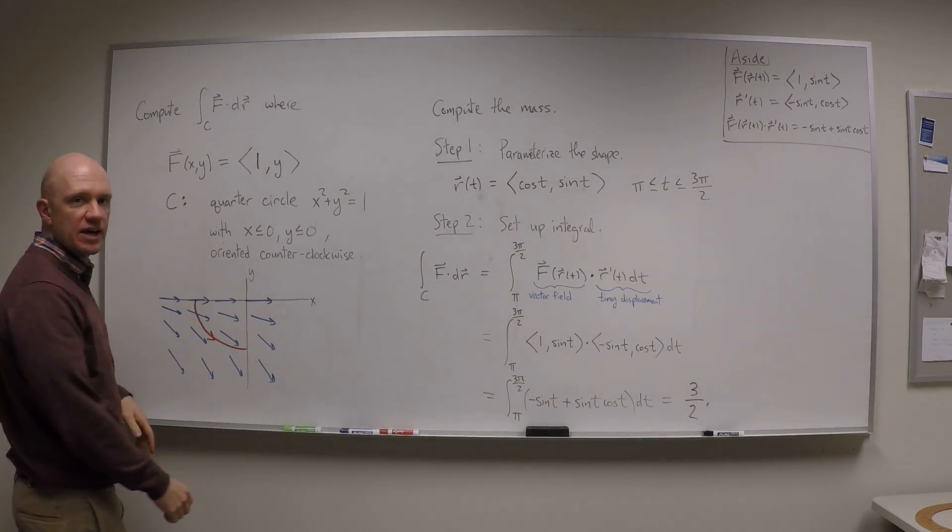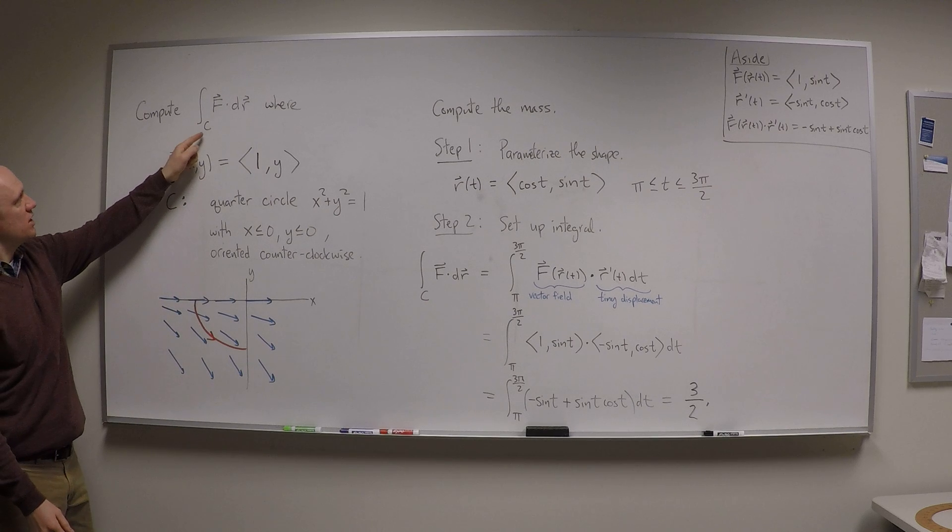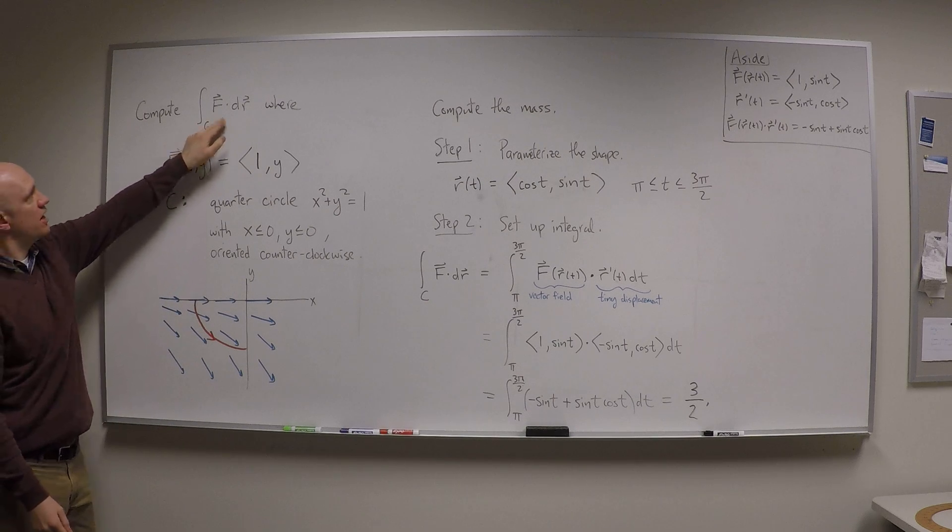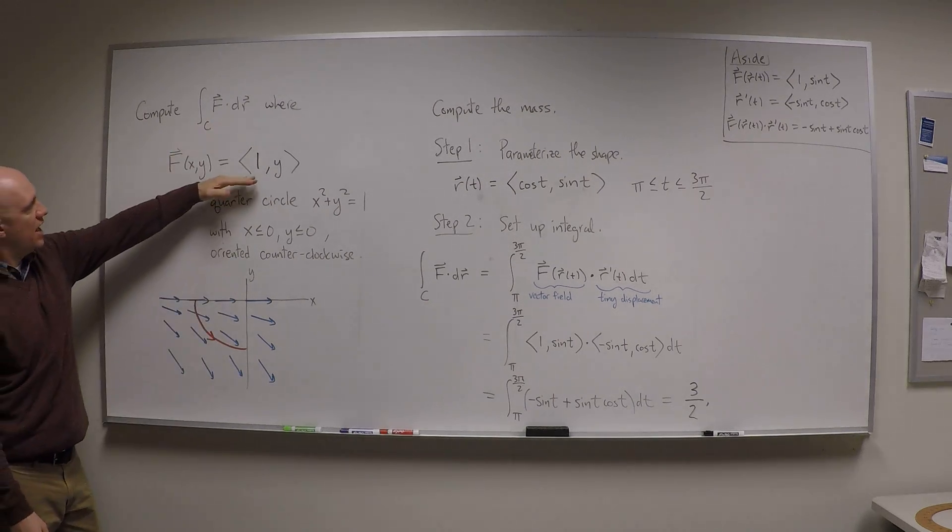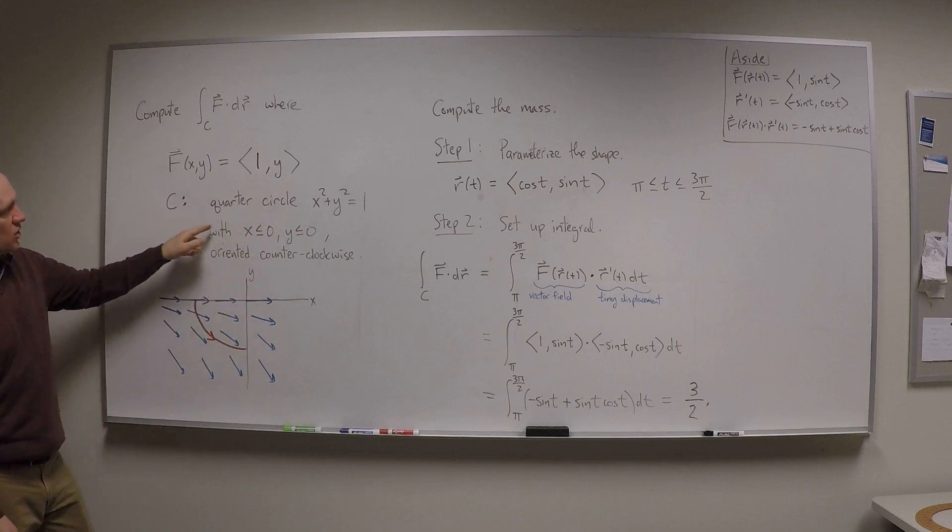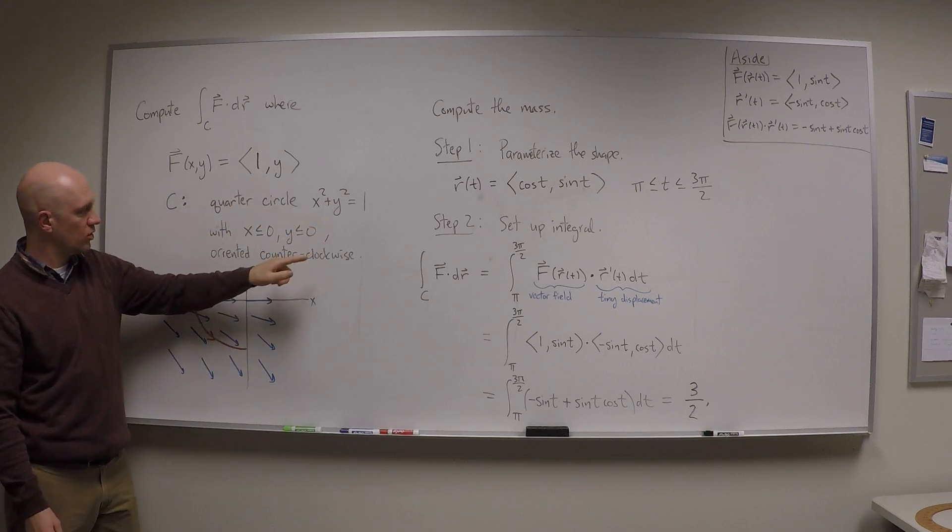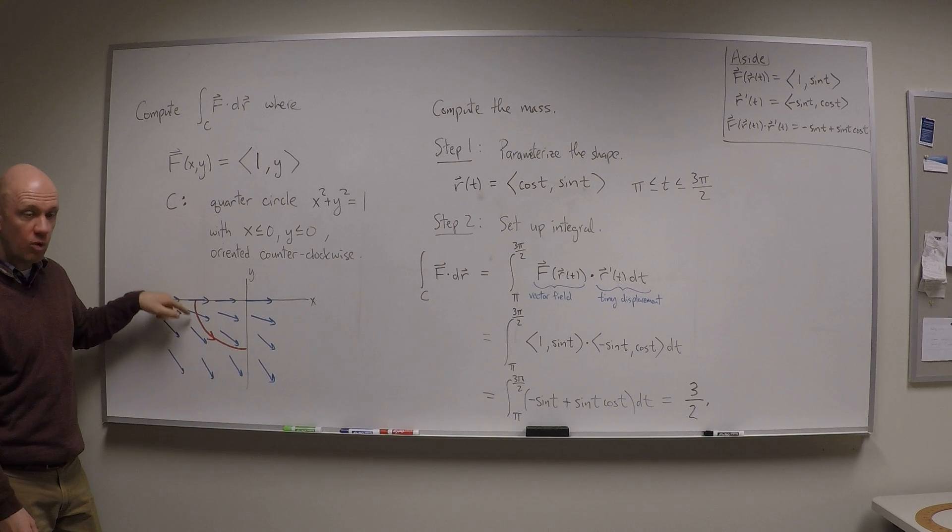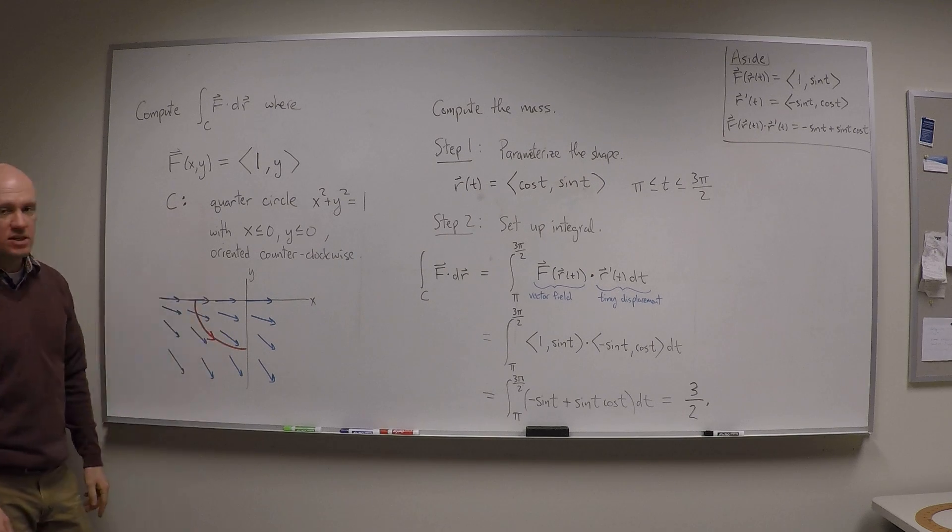Okay, let's do a vector line integral. Let's compute the integral over a curve C of F dot dr, where F is the vector field 1 comma y, and C is the curve which is a quarter of a circle, the quarter which is in the negative quadrant, and it's oriented clockwise.